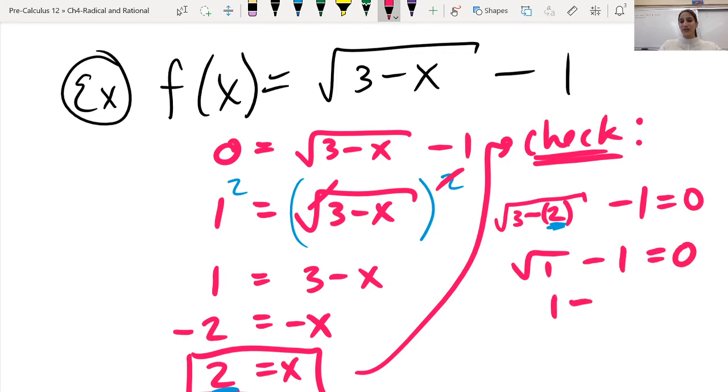The square root of 1 is just 1, so 1 minus 1 equals 0. Yeah, that works. So I can say yes, this definitely is the correct answer.